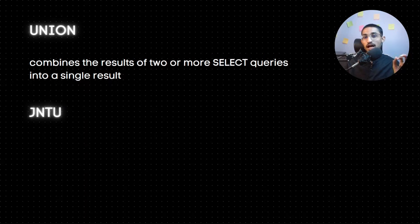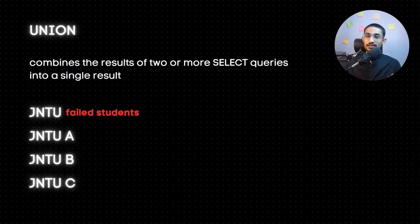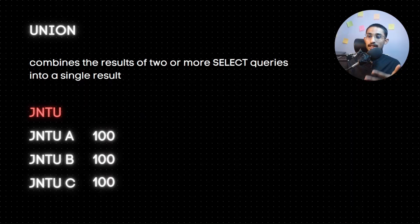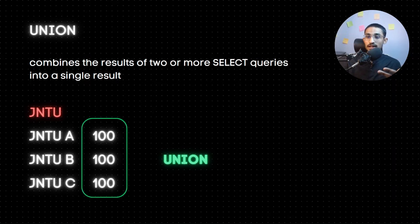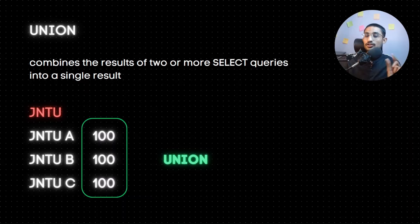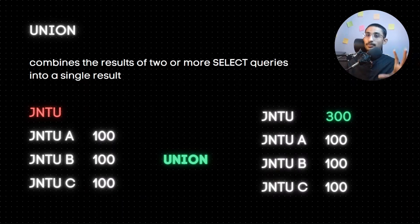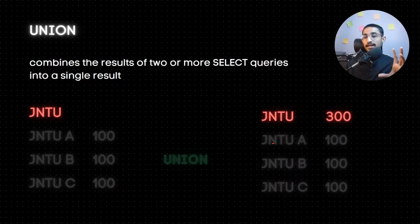Here is an interesting example. There is a J&U college with different affiliated colleges - A, B, and C. Each college has 100 students. If we use union on these three different rows and combine them, the result is 300. So if we use J&U college, there are 300 members total. This is what union is.